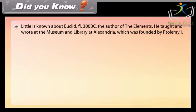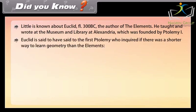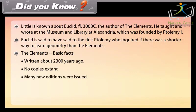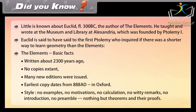Did you know: little is known about Euclid, the author of the Elements. He taught and wrote at the museum and library at Alexandria, which was founded by Ptolemy I. Euclid is said to have said to the first Ptolemy, who inquired if there was a shorter way to learn geometry than the Elements. The Elements: basic facts written about 2300 years ago, no copies extant, many new editions were issued, earliest copy dates from 888 A.D. in Oxford. Style: no examples, no motivations, no calculations, no witty remarks, no introduction, no preamble, nothing but theorems and their proofs.